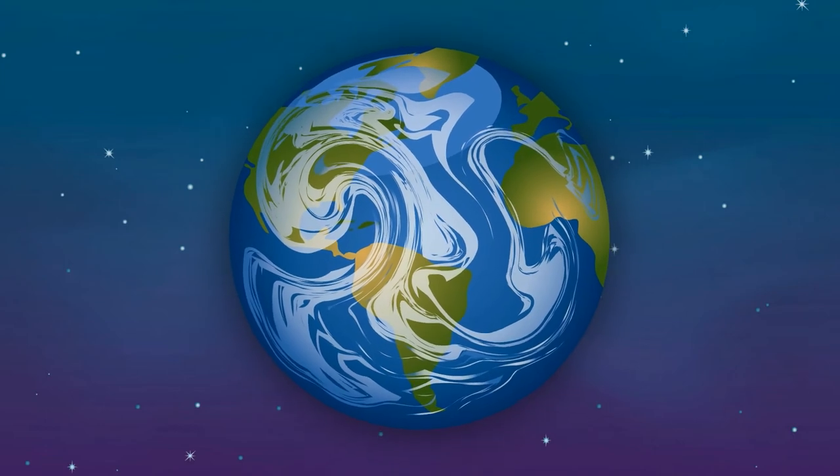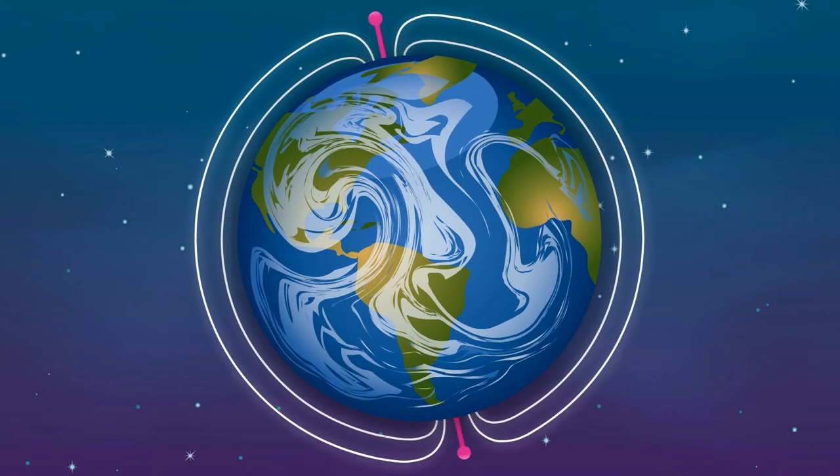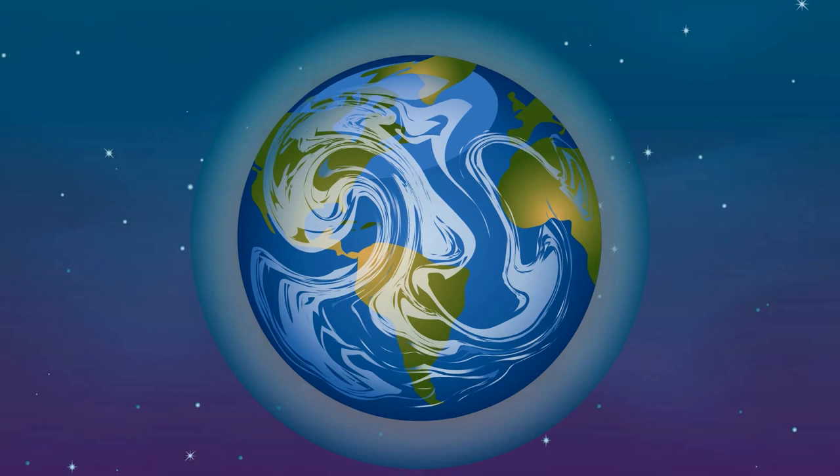Our planet Earth is surrounded by space. It has a natural magnetic field with magnetic north and south poles and is surrounded by a layer of gases that make up our atmosphere.